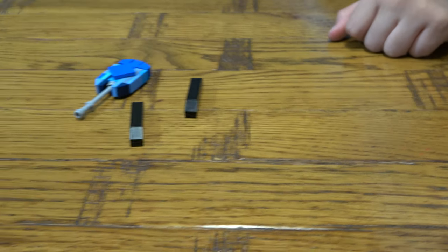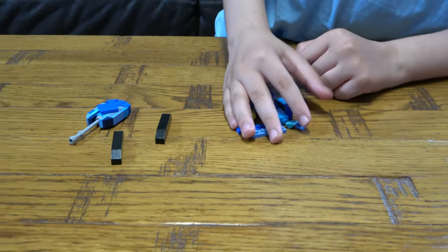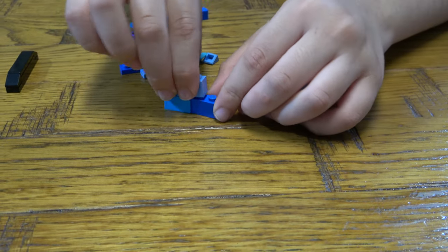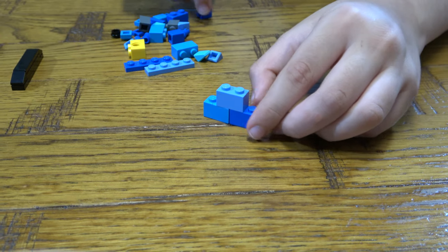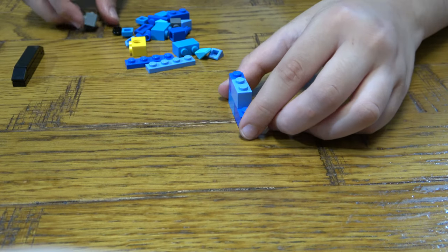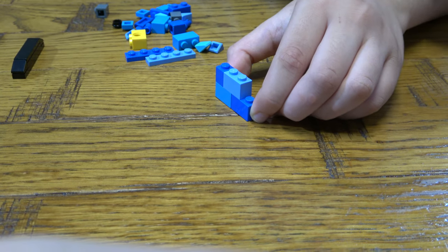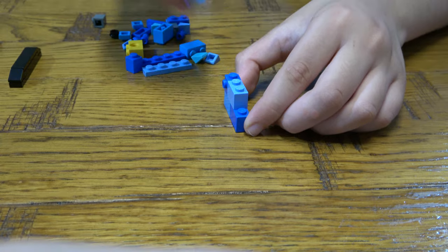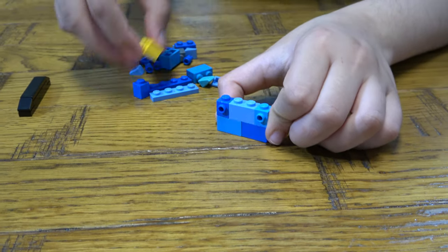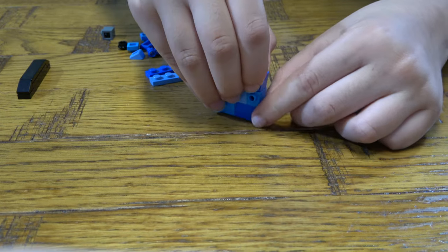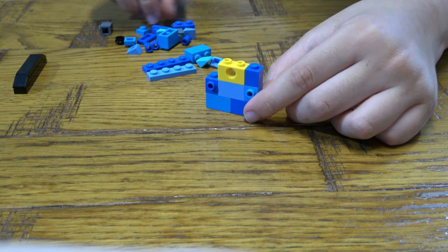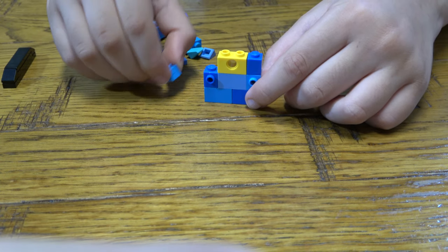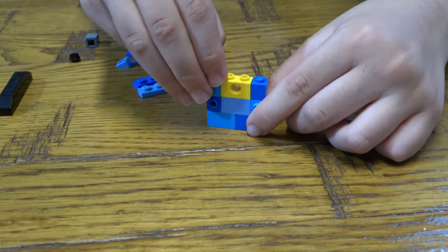And now let's make the bottom of the tank. So first we get this, then we get this, then this, like so. Then place this here. Get this, place another one on top, another one.